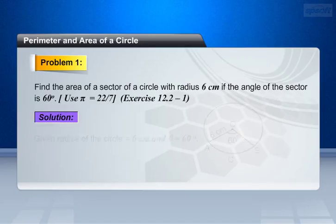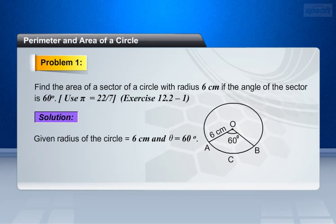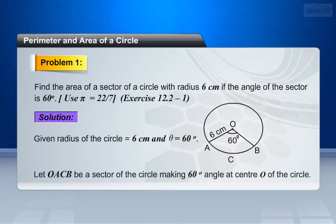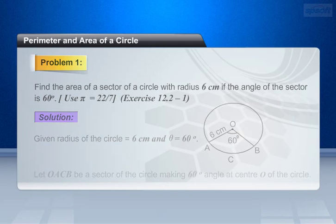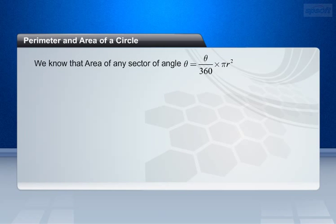Solution. Given: radius of the circle equals 6 cm, and theta equals 60 degrees. Let OACB be a sector of the circle making an angle of 60 degrees at center O of the circle. We have to find the area of the sector OACB. We know that area of any sector of angle theta equals theta by 360 into pi r square.